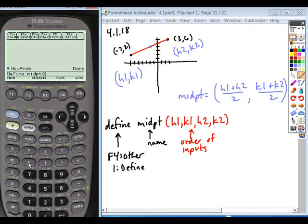So here on our calculator, in parentheses, we can enter H1, K1, H2, K2.